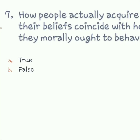Question number seven: how people actually acquire their beliefs coincides with how they morally ought to behave — do you agree or disagree? It's a false statement. It doesn't coincide because the beliefs we hold are not always reflected in our behavior. Sometimes the way we behave is inversely related to the things we believe in or are taught. So B is the answer.